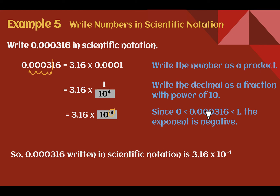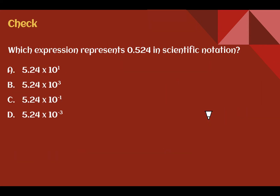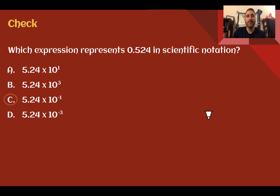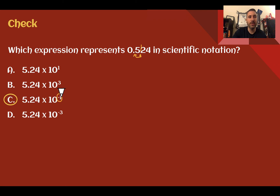Either way you want to do it, make sure you are getting the correct value. Check your understanding: which expression represents 0.524 in scientific notation? You should have said C: 5.24 times 10 to the negative 1. The decimal place goes between the 5 and the 2, and we only had to move it one place to get where it was shown, giving us negative 1 as our exponent.